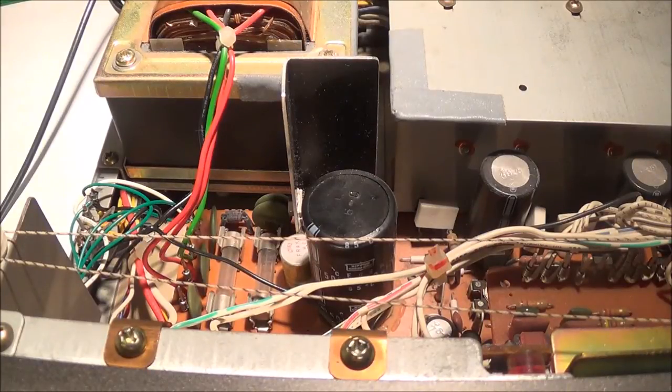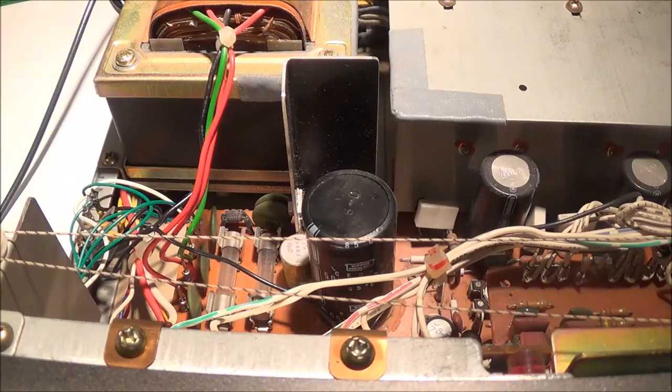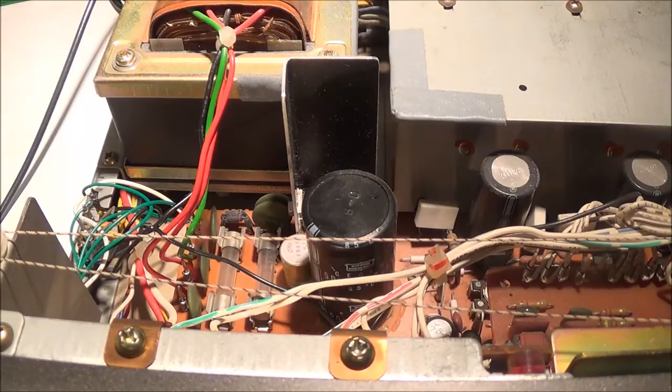Today I'm going to adjust the idling current on this Sakai AA-1010 receiver. I really don't have to do it, it's something I would normally do if I replace the output transistors. But the unit's open and it only takes me a couple minutes, so I'm going to go ahead and go forward with the job.